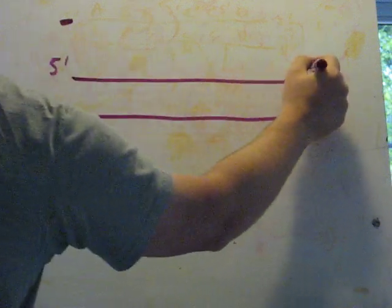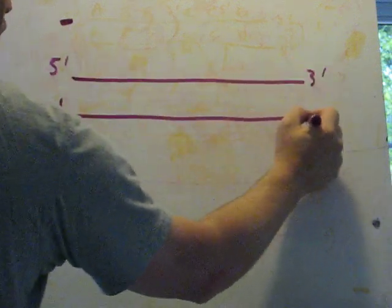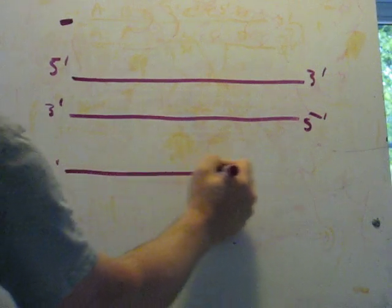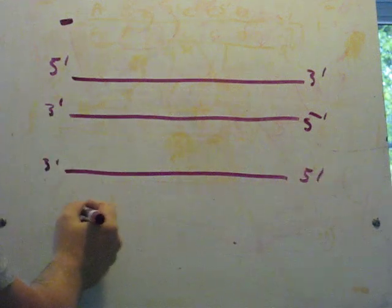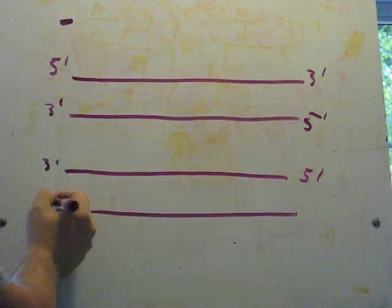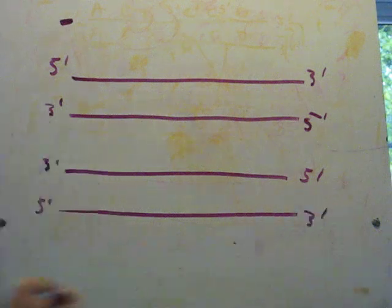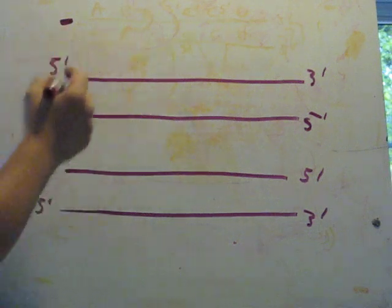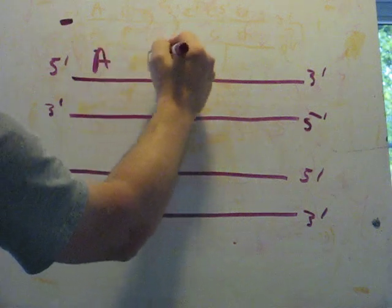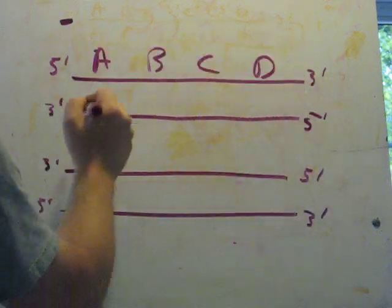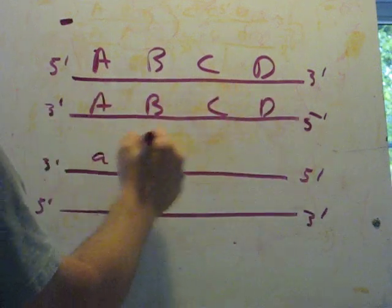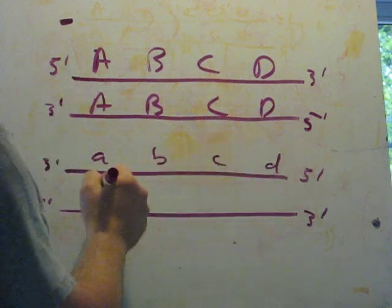We label the ends: 5 prime, 3 prime, 3 prime, 5 prime. And just to make things easier, we do a little trick — we put 3 prime on this side, 5 prime there, 5 prime here, and 3 prime here. We distinguish this duplex from that one by labeling the strands big A, big B, big C, big D on one, and little a, little b, little c, little d on the other.